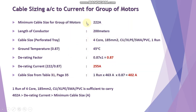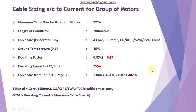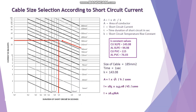The derating current is calculated by dividing 222 amperes by the derating factor of 0.87, giving 255 amperes. The derated cable capacity is 463 × 0.87 = 402 amperes, which is higher than both the derating current of 255 amperes and the minimum cable size of 222 amperes. Therefore, one run of 4-core 185 mm² copper XLPE armored PVC cable is sufficient for this group of motors.